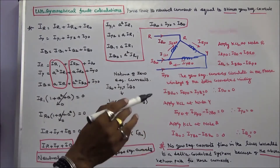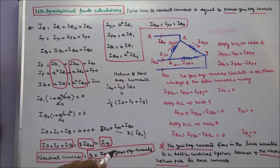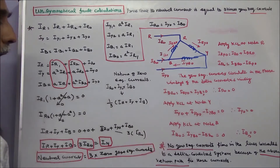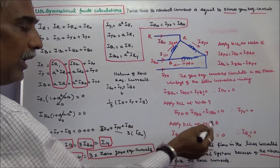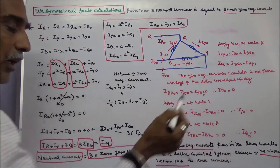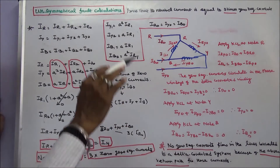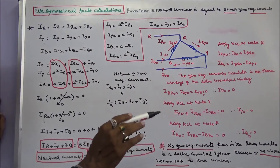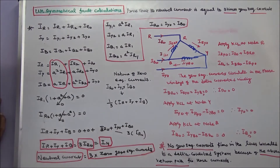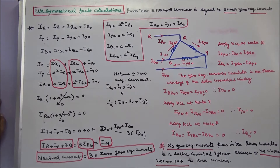The zero-sequence current circulates in the phase windings of the delta-connected winding. Similarly, applying Kirchhoff's current law at nodes Y and B gives IY0 equals zero and IB0 equals zero. The conclusion is: no zero-sequence currents flow in the lines connected to a delta-connected system, because of the absence of a return path for these currents.